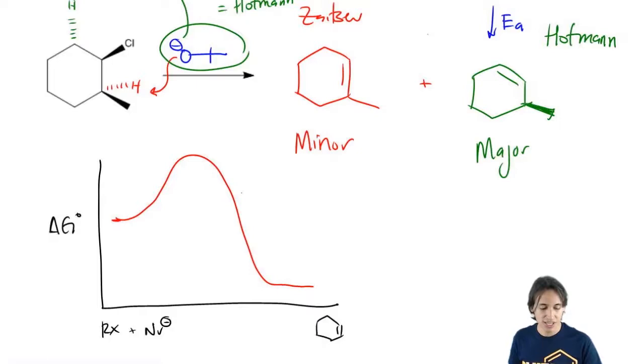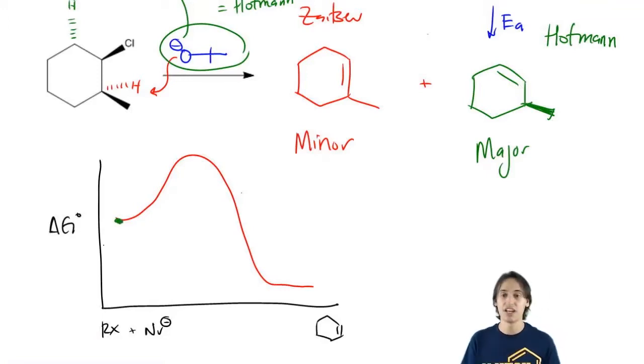Now for the second one, my energy level is at the same place at the beginning, so it's right here. There's my kinetic pathway.